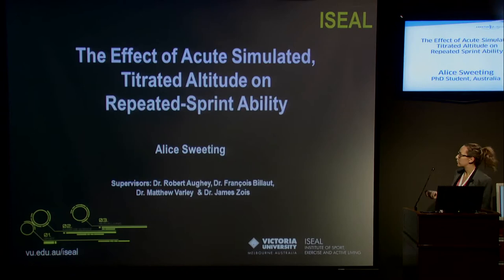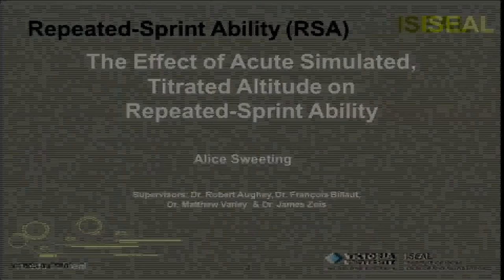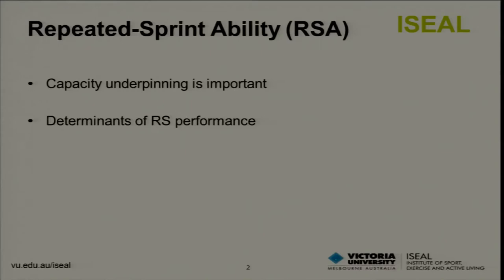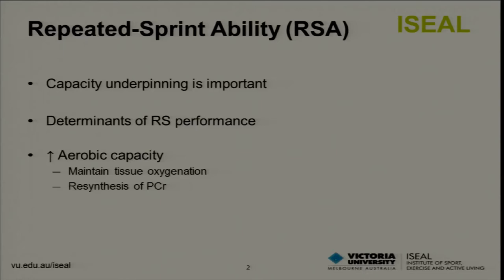This study was my honours study and I looked at the effect of acute simulated titrated altitude upon repeated sprint ability. The capacity to perform repeated sprints is important for team sport athletes. There are a number of determinants of repeated sprint performance, including a high aerobic capacity, which is important to maintain tissue oxygenation and to assist with the resynthesis of PCr — the most important energy substrate for this type of activity.